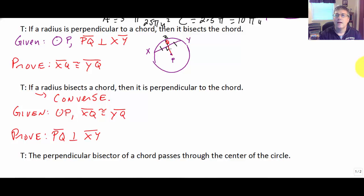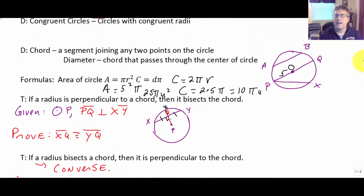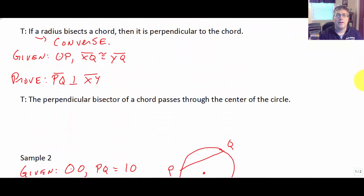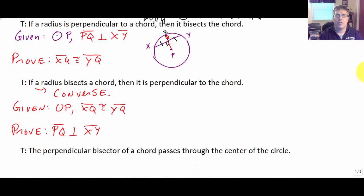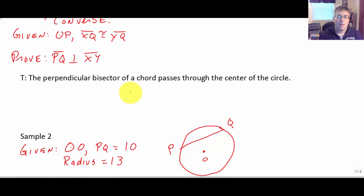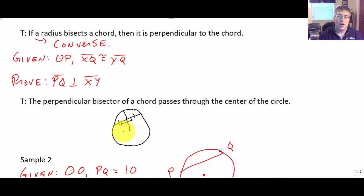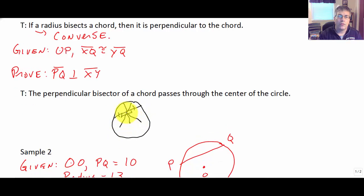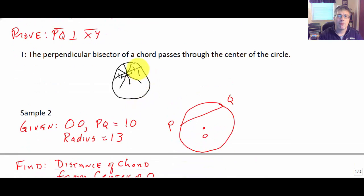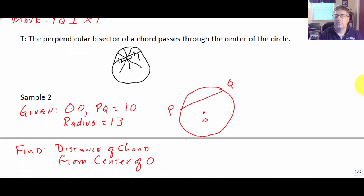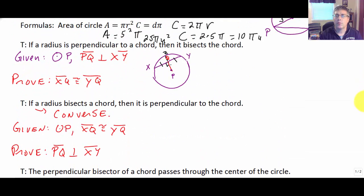Those two theorems go hand in hand — they're converses of each other. Finally, the perpendicular bisector of a chord must pass through the center of the circle. There are all sorts of segments that could be bisectors, but the perpendicular bisector specifically has to go through the center. This is consistent with what we've seen in our previous problems.